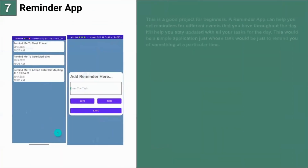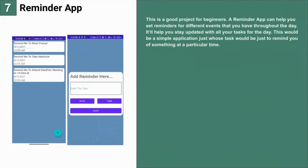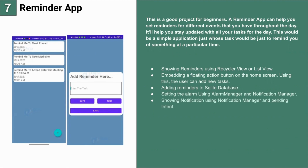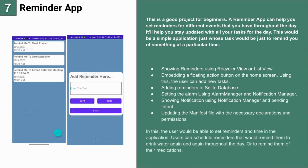The next app is a simple reminder app — a good project for beginners. A reminder app helps you set reminders for different events throughout the day, keeping you updated with all your tasks. For the UI, show reminders using a RecyclerView or ListView, embed a floating action button on the home screen to add new tasks, store reminders in an SQLite database, set alarms using AlarmManager and NotificationManager, and show notifications using NotificationManager and PendingIntent. Update the manifest file with the necessary declarations and permissions. Users can schedule reminders to drink water or take medications throughout the day.